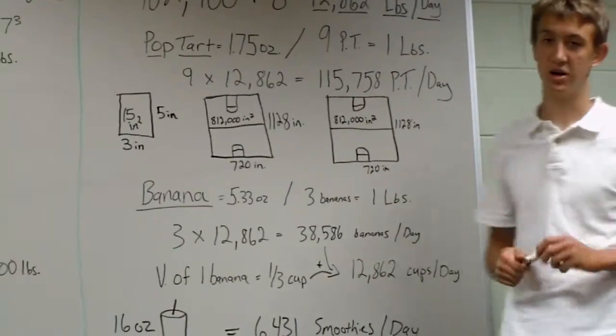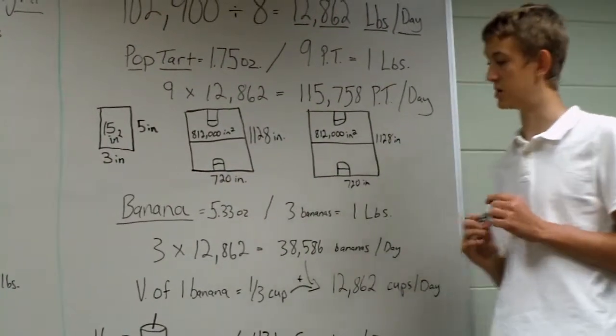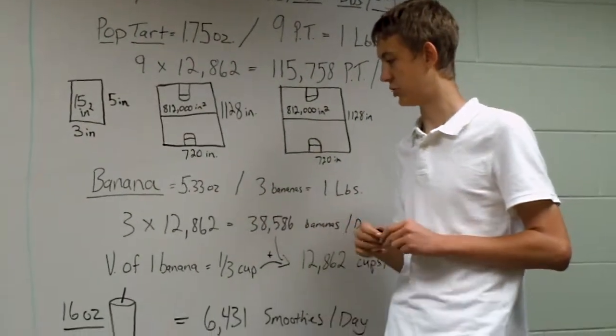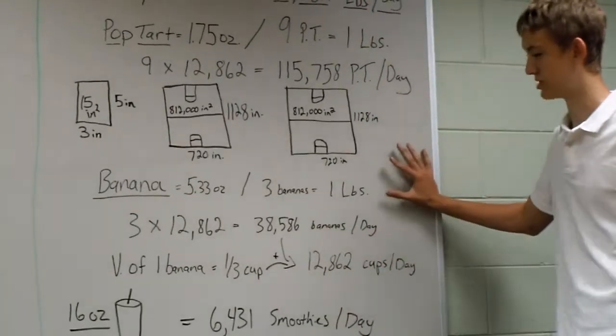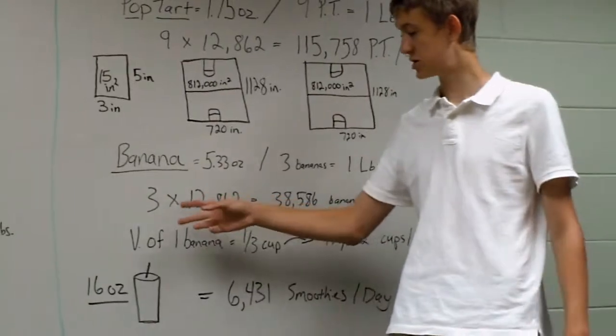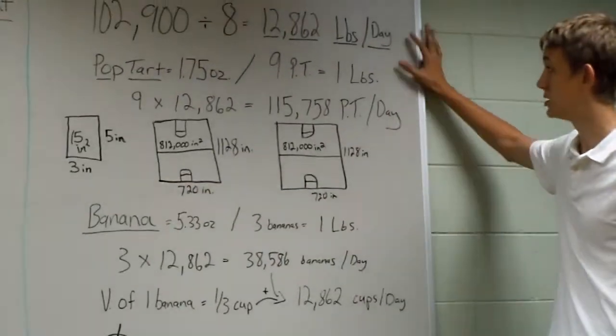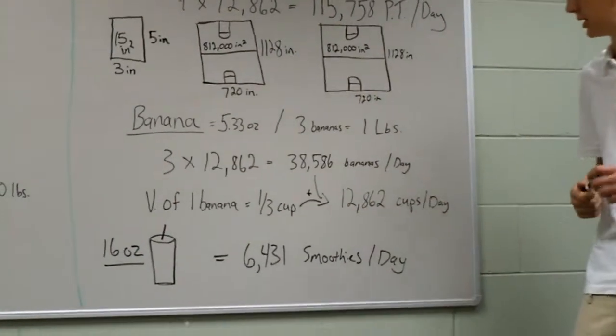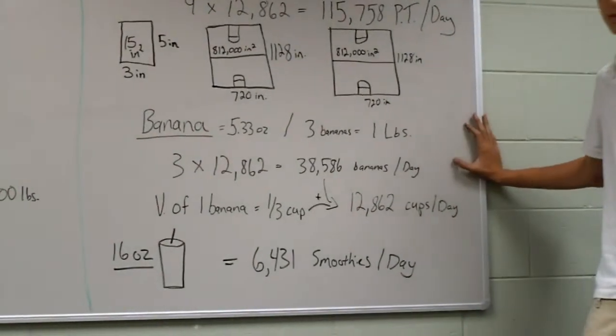Let's say King Kong is a traditional ape and he likes his bananas. An average banana weighs 5.33 ounces, or three bananas in a pound. That is three multiplied by the pounds per day, which is 38,586 bananas per day. That's a lot of potassium.